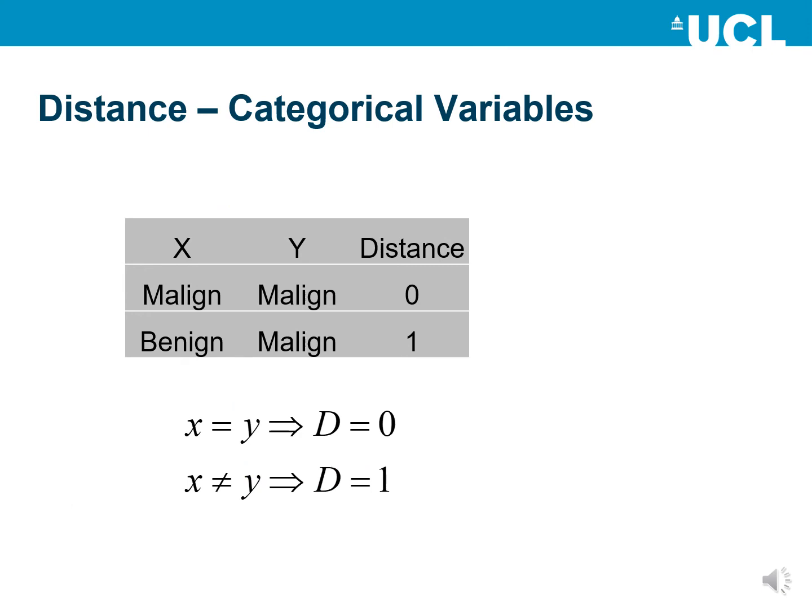What happens if we have categorical variables where we can't directly calculate a distance measurement? In that case we can still define a distance measurement by definition. For example, a malignant-to-malignant case would be 0, and benign-to-malignant would be 1. For any categorical variable we can define such a distance measurement, and then use it in the normal way within our Euclidean distance or other distance measurements.